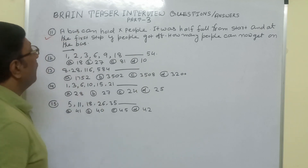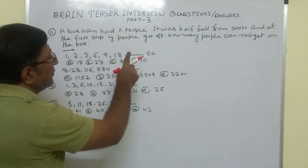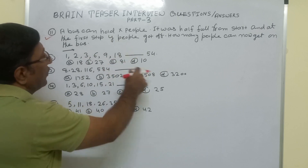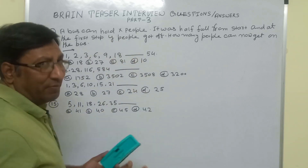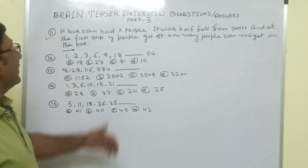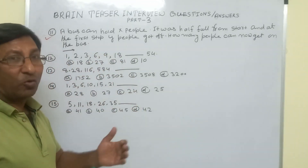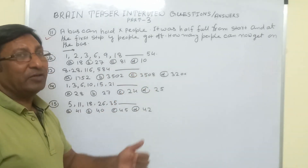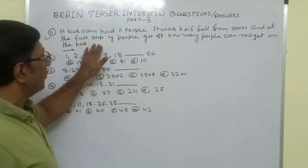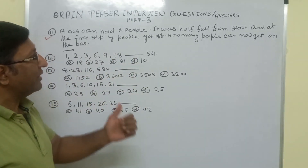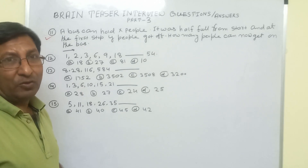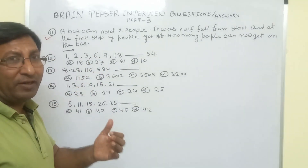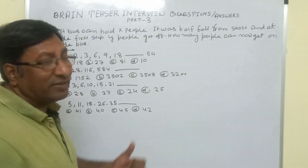The first question is: a bus can hold x people. It was half full from the start, and at the first stop, y people got off. How many people can now get on the bus? For this type of question, the important logic is that you have to read the question very carefully — almost all answers of this type are found within the question itself.